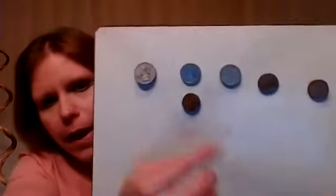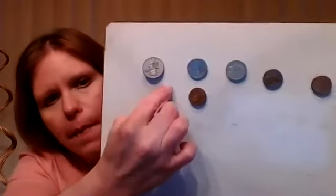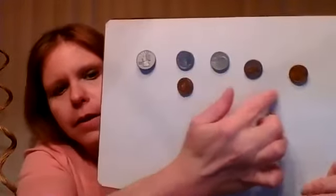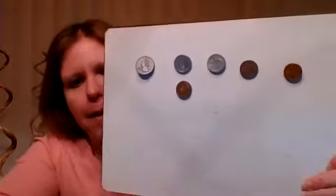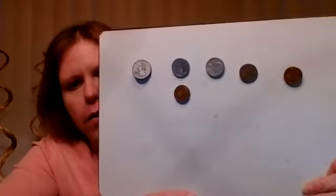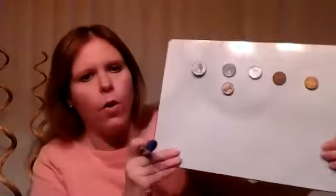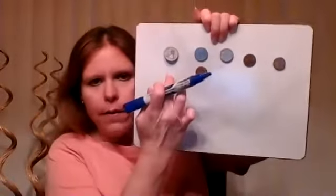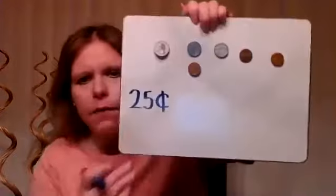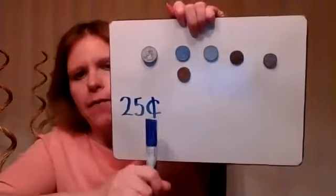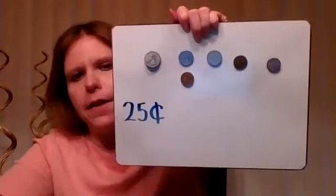It looks like we have a quarter, a couple of nickels, and some pennies. Let's add up those coins. We're going to start with the quarter — a quarter is worth 25 cents, and I only have one quarter, so I have 25 cents for my quarters.